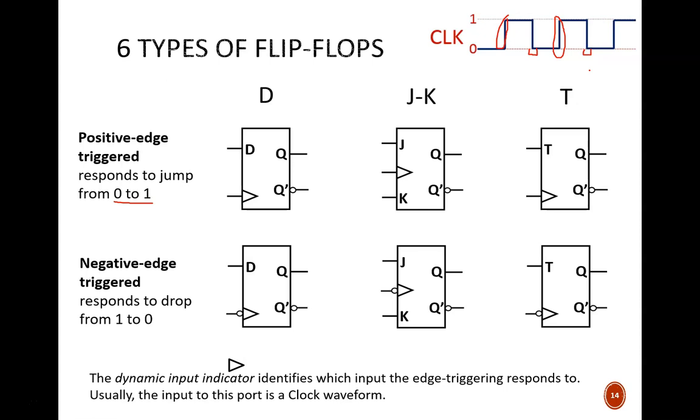That explains the difference between the top and bottom rows on this slide. The columns are labeled D, J-K, and T. These are different types of flip-flops in terms of their instruction inputs. Notice that T and D flip-flops have just one instruction input, while J-K has two.